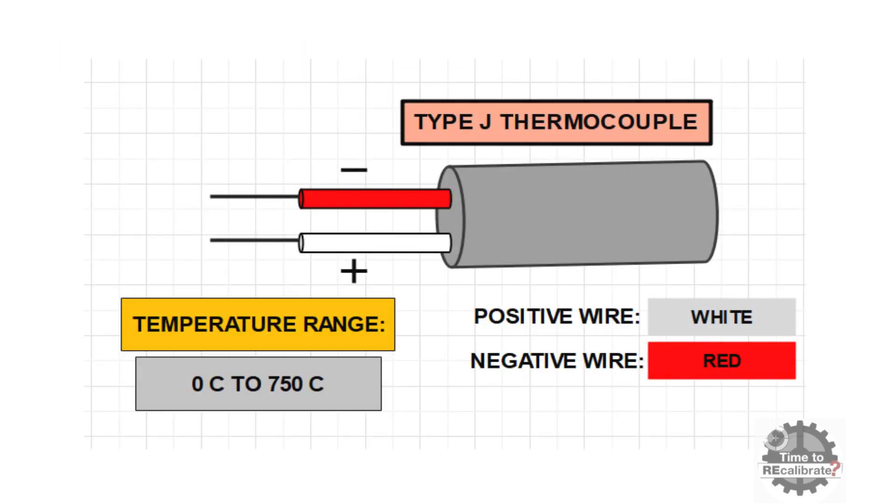For example, type J thermocouple has white and red wires combination. In this type of thermocouple, white wire is positive and red wire is negative. And J type thermocouple has temperature range of 0 Celsius to 750 Celsius.